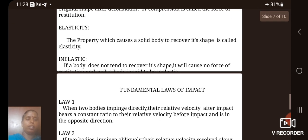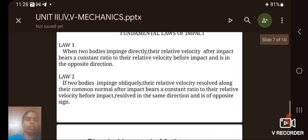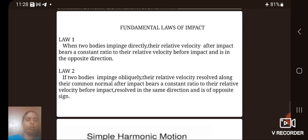Then next we see the fundamental laws of impact. Law 1: When two bodies impinge directly, their relative velocity after impact bears a constant ratio to their relative velocity before impact and is in the opposite direction. Law 2: If two bodies impinge obliquely, their relative velocity resolved along their common normal after impact bears a constant ratio to their relative velocity before impact resolved in the same direction and is of opposite sign.